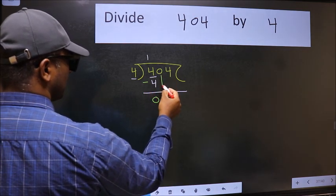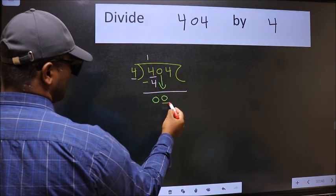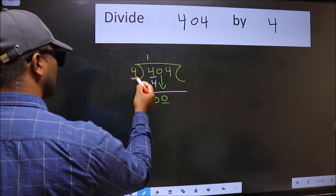After this, bring down the beside number. So 0 down. Now here we have 0 and here 4.